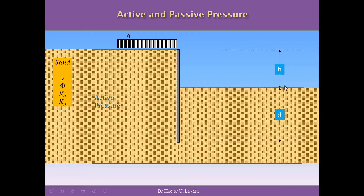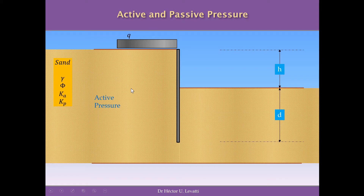The general dimensions are H — the height of the wall from the ground on the right side to the top of the wall — and D, the distance by which the wall is inserted in the ground. The data in these kinds of situations are the soil properties. For this example, we have a sand with unit weight gamma and angle of internal friction phi, along with the coefficient of active pressure Ka and the coefficient of passive pressure Kp, which are used to determine the active and passive pressure on both sides of the wall.